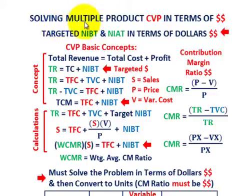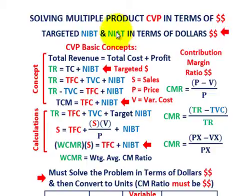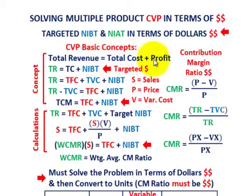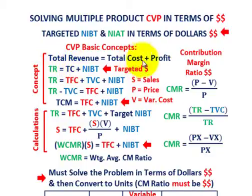What we're going to be going over here is solving for multiple product cost volume profit analysis in terms of dollar amounts. We're going to be solving for targeted net income before taxes and net income after taxes in dollar amounts. For cost volume profit analysis, the basic concept is that your total revenues equal your total cost plus some profit. Our total revenue TR equals our total cost TC plus some profit.